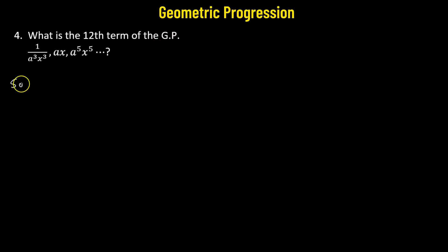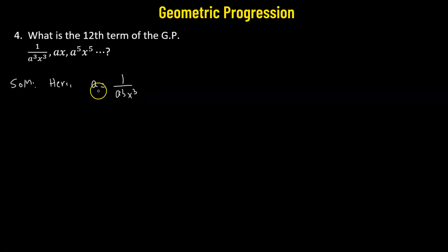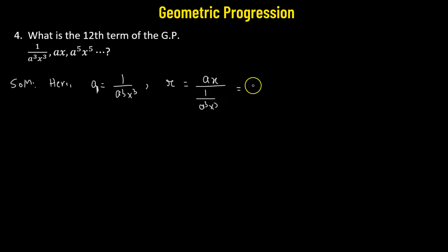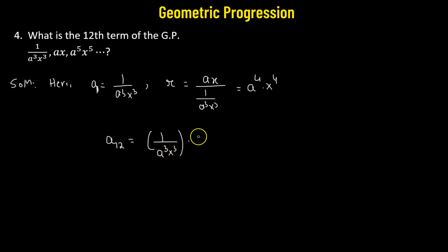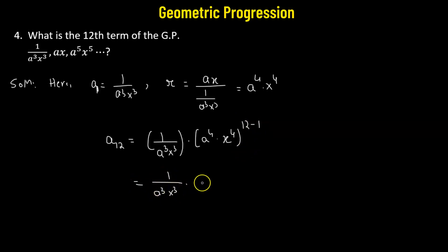Problem number four: we need to obtain the 12th term of the geometric progression. The first term, a1, is 1 over a cubed times x cubed. The common ratio r is the second term ax divided by 1 over a cubed x cubed, which gives a raised to the power of 4 times x raised to the power of 4. The 12th term equals a1 times r raised to the power of 11, which is 1 over a cubed x cubed times a to the 4th times x to the 4th, all raised to the power of 11.